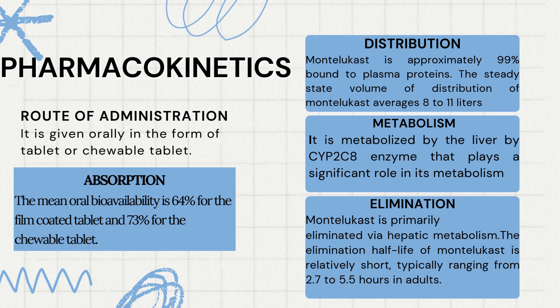Distribution: Montelukast is approximately 99% bound to plasma proteins. The steady-state volume of distribution averages about 8 to 11 liters. Metabolism: It is metabolized by the liver by the cytochrome P450 2C8 enzyme. Elimination: Montelukast is primarily eliminated via hepatic metabolism. The elimination half-life is relatively short, ranging from 2.7 to 5.5 hours in adults.